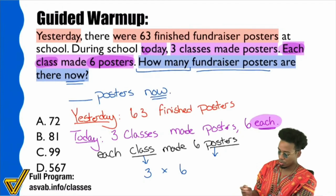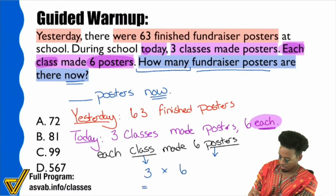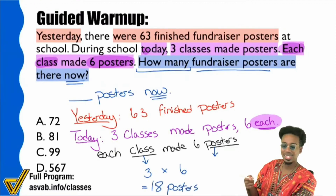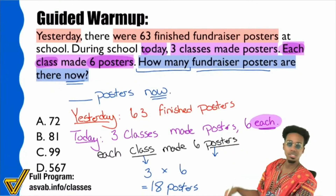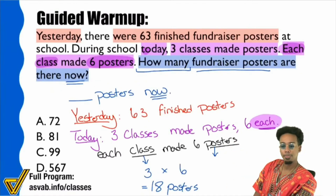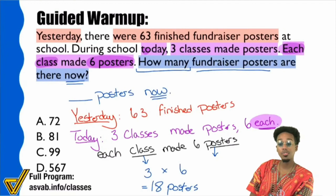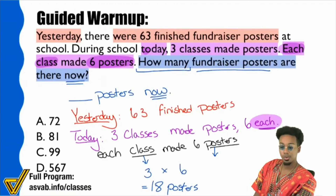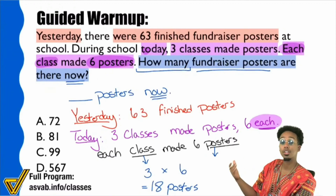Three times six gives us 18 — that's 18 posters. But why is 18 not the final answer? Why don't we see 18 as the answer? Because we're not done yet. What did we forget about? We forgot that there were already 63 posters made yesterday.